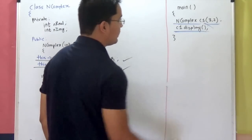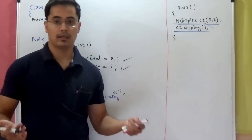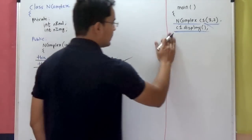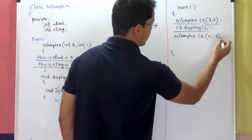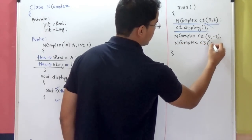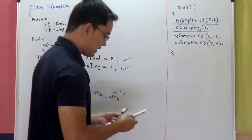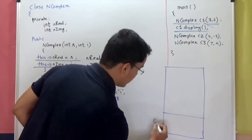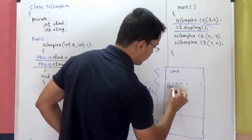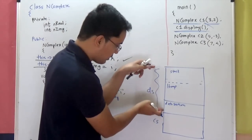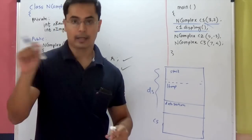So when you create this object C1 of nComplex class, the data members need to be stored in memory somewhere. Also, the member functions of the class will reside in memory somewhere. When your program is under execution, a structure like this follows: there is a code segment and a data segment. In the data segment you have stack, heap, and data section. The data segment is used to store variables and the code segment is used to store your lines of code — the actual lines of code which are executed. Now nComplex class has two data members: nReal and nImaginary, and currently two member functions: display and the nComplex parameterized constructor.